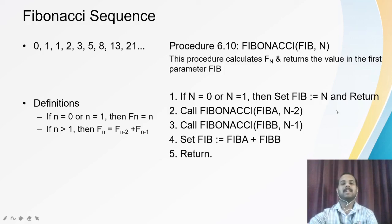If N is not 0 or 1, then calculate two terms: call Fib A for N-2 and Fib B for N-1. The result of F(N-2) is stored in Fib A and the result of F(N-1) is stored in Fib B. Then set Fib equal to Fib A plus Fib B and return.